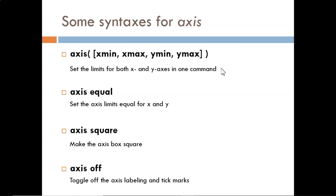We could also use axis for some automatic scaling. Axis equal sets the x and y axes at the same limits. Axis square makes the axis box, or the figure, a square. Perhaps you don't want to see the axis at all. In that case, use axis off.